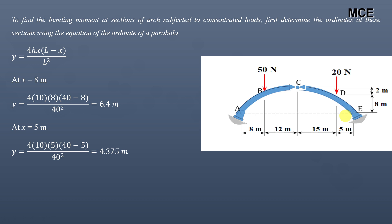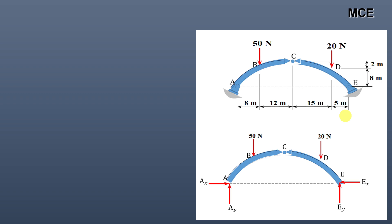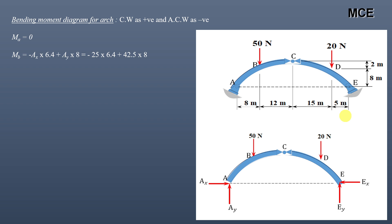Now you can calculate the bending moment diagram for this arch. We again assume clockwise moments are positive and anti-clockwise are negative. The bending moment at A is zero because it is a hinge support. The bending moment at B: the moment of Ax about B is anti-clockwise, with the ordinate at B being 6.4 meters; the moment of Ay about B is clockwise with a lever arm of 8 meters. So: minus 25 into 6.4 plus 42.5 into 8, which equals 180 newton-meters.